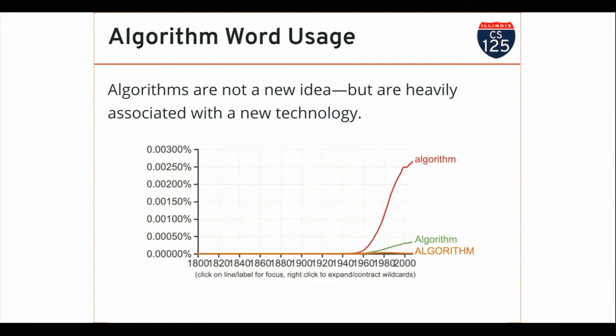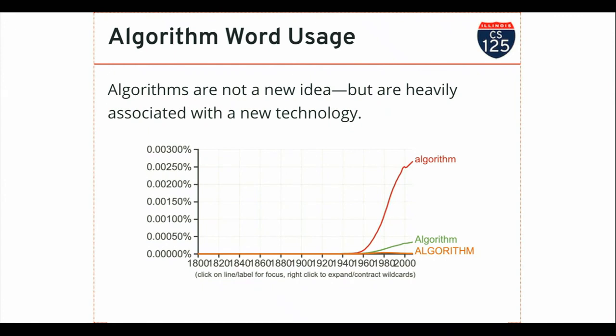The word algorithm is heavily associated with the computer era. By mining digitized text data collected over many years, you can see when the usage of the word 'algorithm' starts taking off — around 1960. What was happening around that time? Computers. For the next several weeks, what we're going to be doing together is implementing algorithms — simple algorithms.